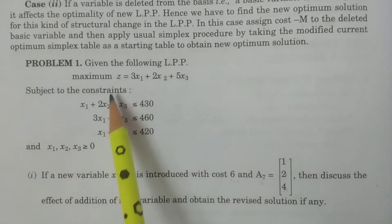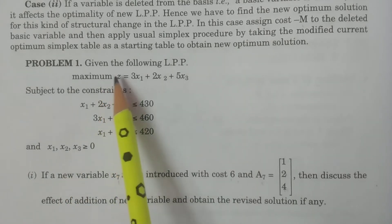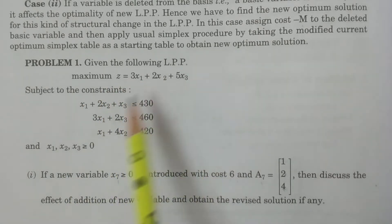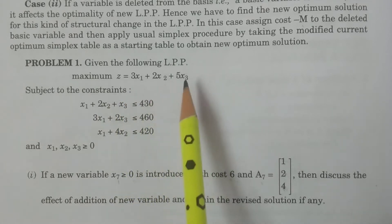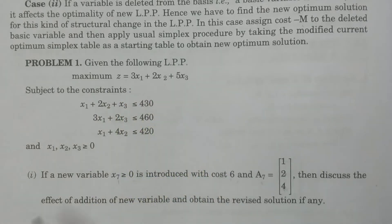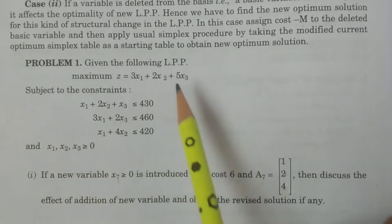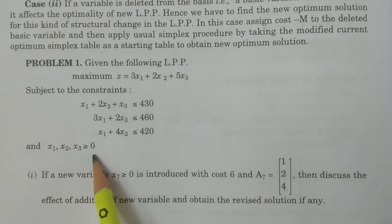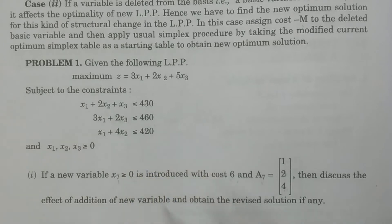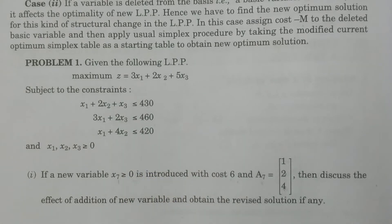The problem is given: the following LPP maximize z equal to 3x1 plus 2x2 plus 5x3, subject to the constraints, with x1, x2, x3 greater than or equal to 0. The problem has less-than-or-equal-to constraints with three variables.